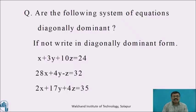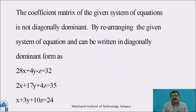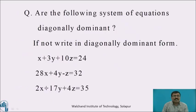Pause the video and answer the following question: Are the following systems of equations diagonally dominant? If not, write them in a diagonally dominant form. By observing the given system of equations, the coefficient matrix is not diagonally dominant. You must rearrange the equations such that the coefficient of x is larger than those of y and z in the first equation, the coefficient of y is larger in the second equation, and the coefficient of z is larger in the third equation.